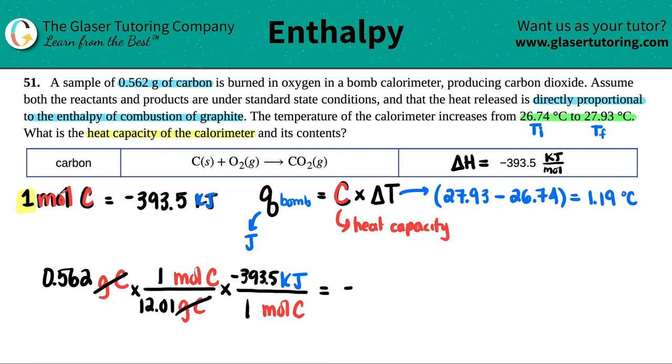So 0.562 divided by 12.01 times by 393.5. And I get roughly negative 18.414, and now that's in kilojoules. So this is the amount of heat that is going to be released when this combustion is happening. I still need it in joules though. But we know how to go from kilojoules to joules. All we got to do is just times by a thousand. So this would be basically 18,414 joules. And now I found out the Q.